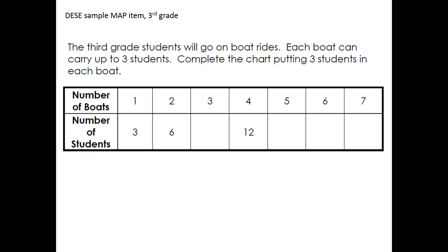Here's a 3rd grade item from the MAP test. It's a sample item asking students to complete a table showing the number of students that can ride on a certain number of boats. There are ratios involved in a table like this. For example, we could compare the number of boats to the number of students and say that the ratio 1 to 3 represents one boat and three students, 2 to 6 represents two boats and six students, and 4 to 12 represents four boats to 12 students. If we look at this problem as representing ratios, we can simply complete the ratios using equal fractions.